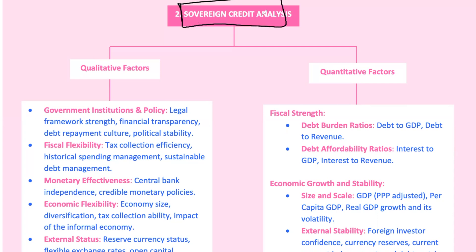Sovereign credit analysis. Why do governments borrow in the first place? Unlike a company, a government isn't in it for profit. It borrows to fund public services and balance its budget when revenues fall short. Government bonds are generally seen as lower risk because they're backed by the government's ability to collect taxes. But not all government bonds are equal. Developed countries like the U.S. and Germany tend to be safer bets, while emerging economies often come with higher risk, influenced by economic, political, and social factors.